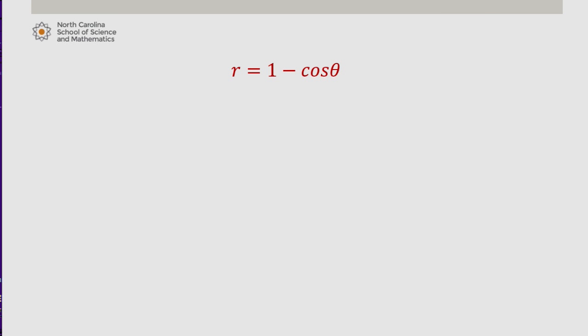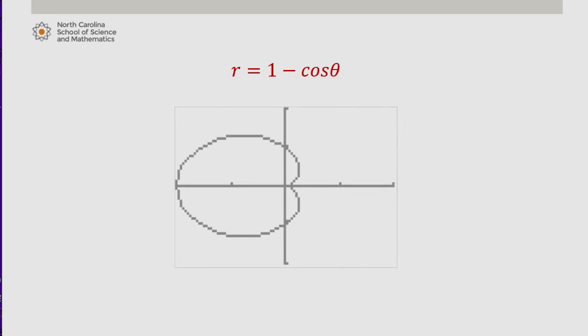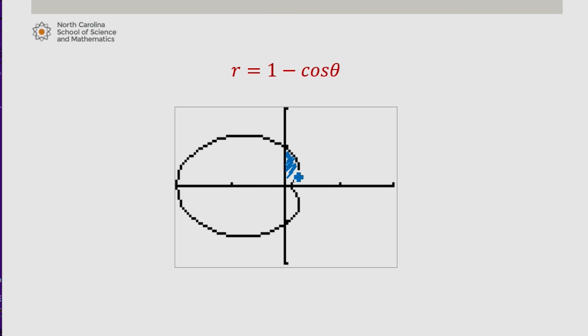Let's get a sense first of what the curve looks like. Here's a graph. The part of the polar curve that I'm interested in finding the area of is just that first quadrant piece.